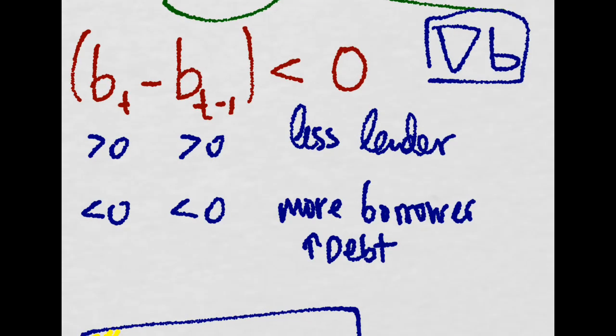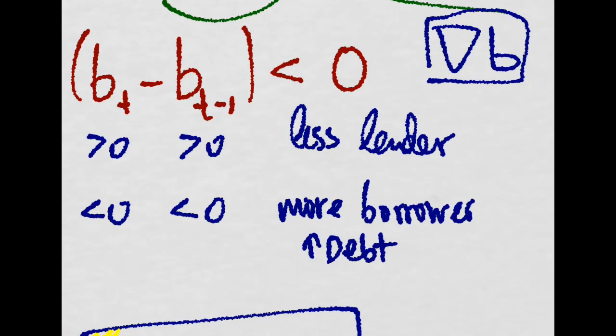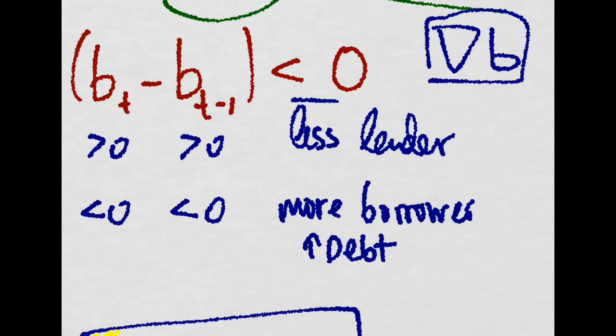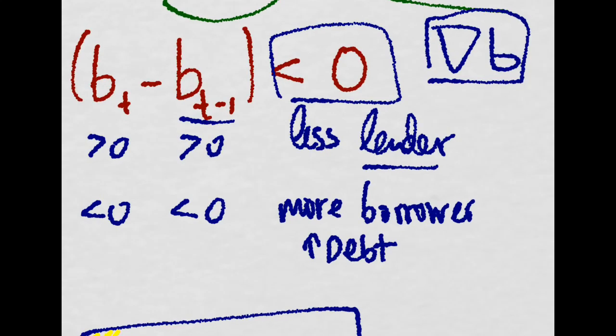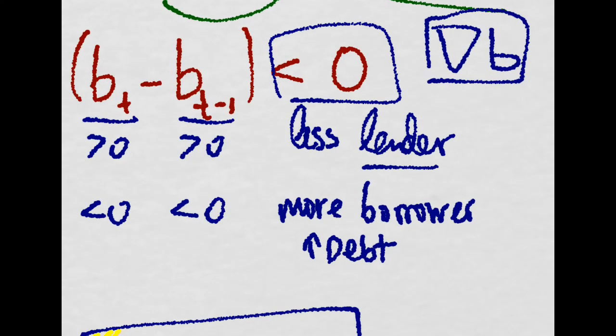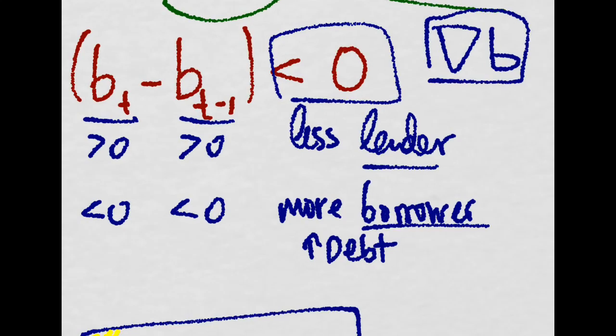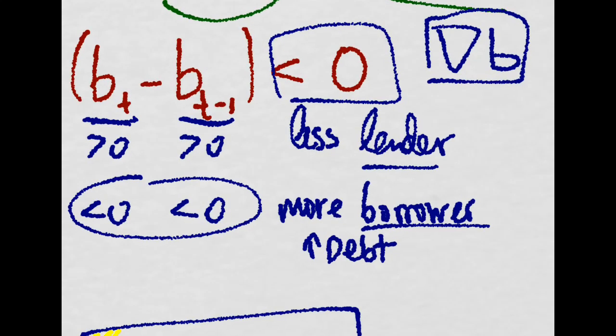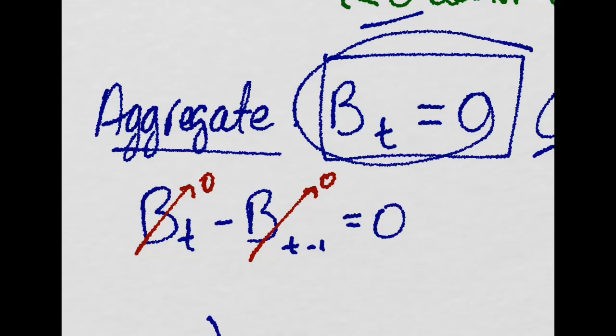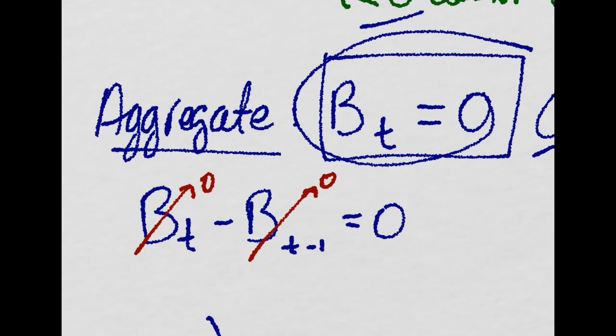So if the change in the stock of bonds for an individual is less than zero, that would mean that if he was a lender, both are positive, but he is lending less. If he was a borrower, then both are negative, and he is borrowing more. He is increasing his debt. But on aggregate, it is all zero.